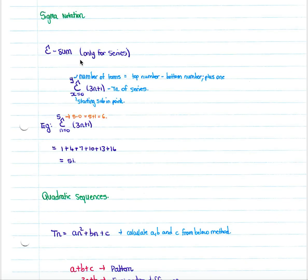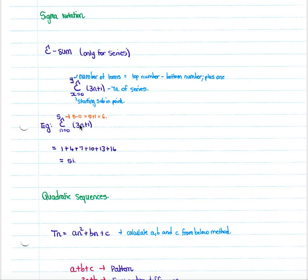Sigma notation confuses quite a few people, but it is simply the sum of a series. The value at the top of the sigma symbol is the number of terms. To know how many terms to add up, you take the top number minus the bottom number plus one. In this example, you calculate to five terms starting at zero: five minus zero plus one equals six terms. You then substitute in zero, one, two, up to five into the formula and add the results to get the sum.